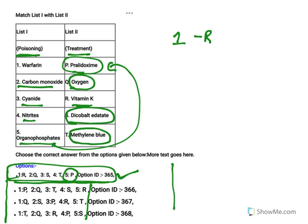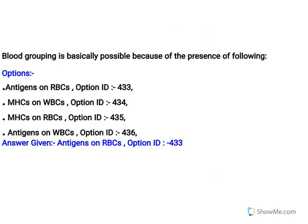Blood grouping is basically possible because of the presence of antigens on RBCs — straightforward question, so that option is correct.